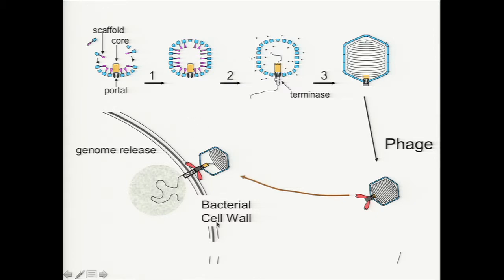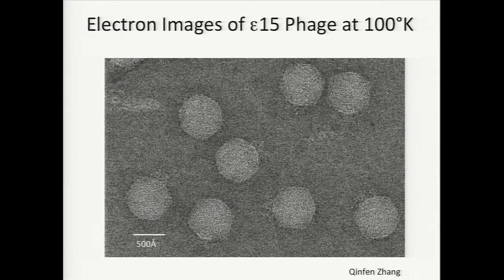As molecular structural biologists, we are interested to investigate what these phages look like at different stages of assembly. Fortunately, molecular biologists have been studying these phages for many years — a lot of genetics has been done, biochemistry has been pursued — but we still don't know how it looks. So in these studies, we used a cryo-electron microscope to look at these bacteriophages. Each particle is approximately 700 angstroms in diameter and has an angular shape.